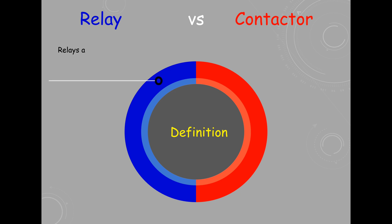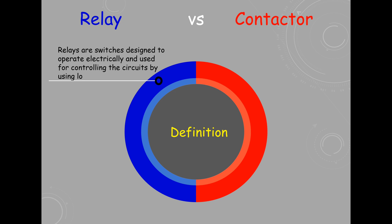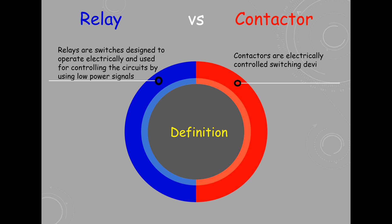Relays are switches designed to operate electrically and used for controlling circuits by using low power signals. Contactors are electrically controlled switching devices which are used for switching electrically.